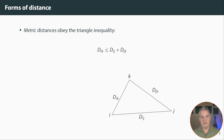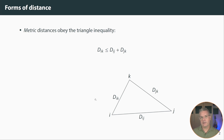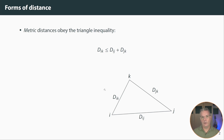Lots of different types of distance are usable. We might consider the distance we encounter in our everyday lives, which is a metric distance. All metric distances obey the triangle inequality. The triangle inequality is, in plain English, the shortest distance between two points is a straight line. So the distance D sub ik is never greater than the sum of the distances if we have some intervening point between them.